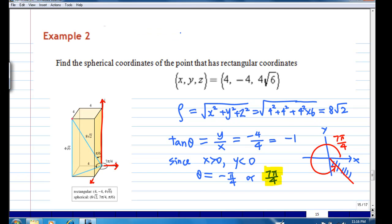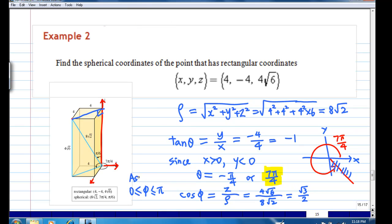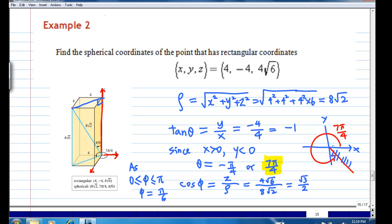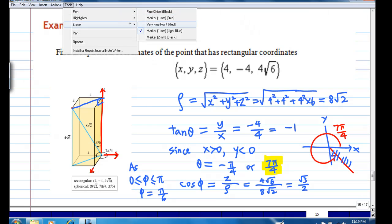To find phi, we know that cos φ is equal to z over rho. Z is equal to 4√6, rho is equal to 8√2. Calculating gives √3/2. As we know phi is from 0 to π, we conclude that phi is equal to π/6. From here we have obtained the spherical coordinates of a given point in Cartesian coordinates.